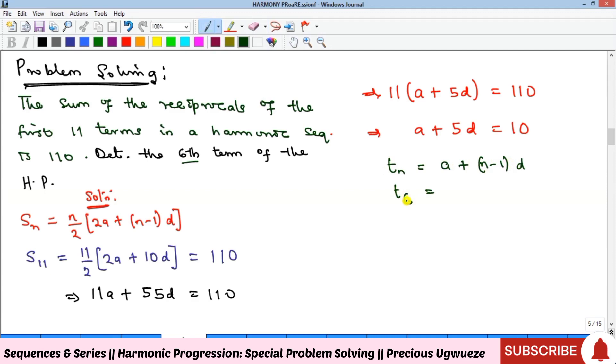In this case, we're looking for the sixth term, which is a + (6-1)d, or a + 5d. So the sixth term of the AP is a + 5d, meaning that the sixth term of that corresponding AP in this problem is what we have as 10.